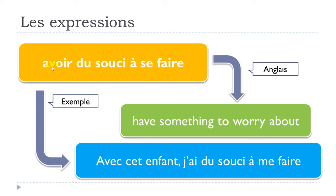If you compare the base expression AVOIR DU SOUCI À SE FAIRE, you'll notice the SE here. You will have to modify it depending on the subject. Since the subject is JE — the first person — you put ME: j'ai du souci à ME faire.